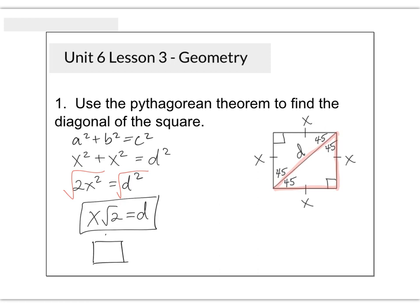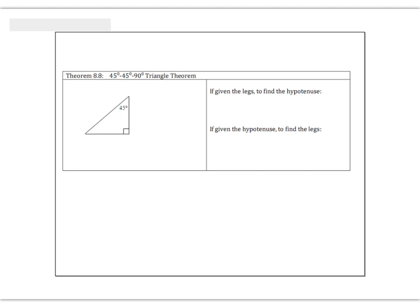In other words, if you have a square and the side lengths are all 5, then the diagonal is going to be 5 root 2. If the sides are all 7, the diagonal will be 7 root 2. So in a 45-45-90 triangle, two legs will be the same — because if two angles are the same, the two sides opposite of them will also be the same. And the hypotenuse will be that number times root 2. That happens in every single 45-45-90 triangle. So if you're given the legs and want to find the hypotenuse, all you have to do is multiply by the square root of 2.